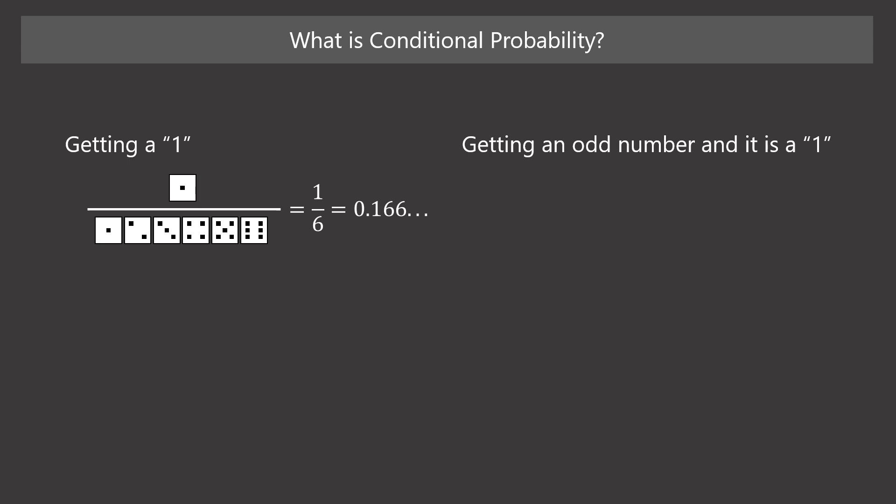Let me ask you another question. We throw a die and we get an odd number. In this case, what is the probability that it is a 1? In this case, a condition exists. The pip is an odd number.